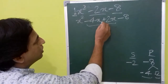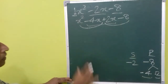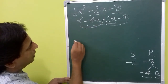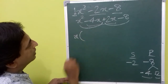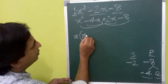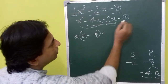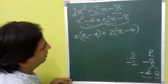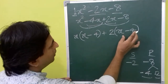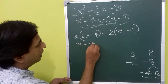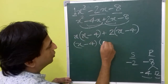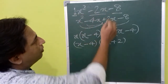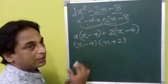We have split the middle term into two parts. Now we need to group these two parts and take the common factor out from each group. Here x squared minus 4x has a common factor x. We can see x minus 4 in the bracket, and x minus 4 is common in both terms, so we take it out: x minus 4 times x plus 2. We have found two factors of this polynomial.